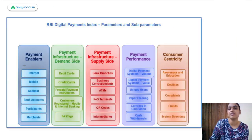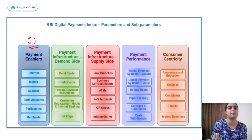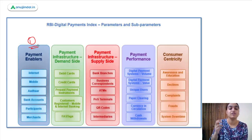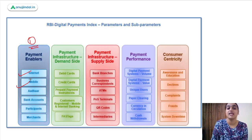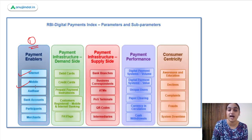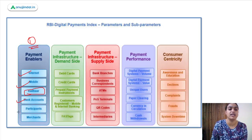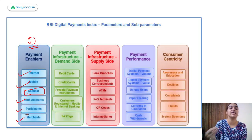The first parameter is payment enablers, which help us to make payments online. The first and foremost thing needed is internet — the network which helps in making payments online. Mobile is also a basic amenity needed. Aadhaar verification is important. Bank accounts are needed. Participants and merchants are also part of this. All of these help us to make payments online.